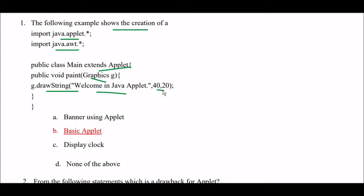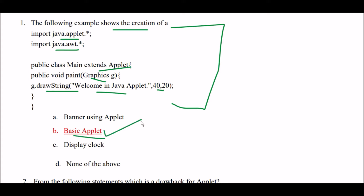Options are: A) banner using applet, B) basic applet, C) display clock, D) none of the above. This program is the creation of a basic applet, because no display clock function is used and there is nothing like a banner using applet. So the right answer is Option B, basic applet.